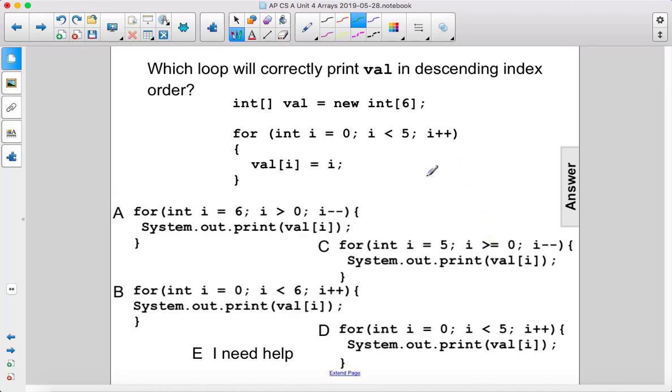Which loop will correctly print val in descending index order? This array looks like this, and these are also the index values. We're going to want to print them in descending index order, so this way. We're going to start with 5 and print down to 0.